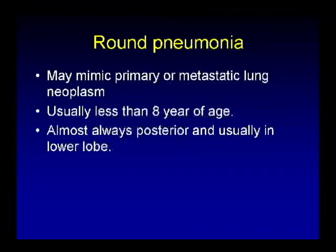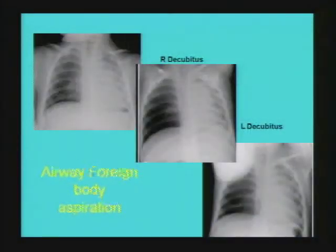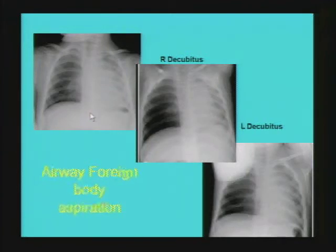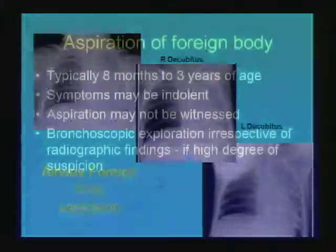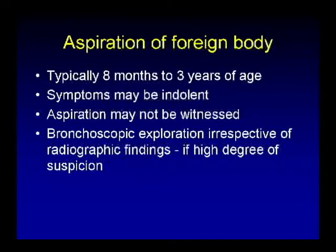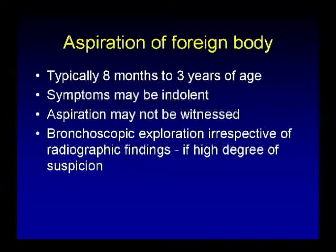This is a demonstration case for airway foreign body aspiration — a patient with a non-radiopaque right bronchial foreign body obstruction. This right and left lateral decubitus radiograph shows failure of collapse of the right lung on the right lateral decubitus view, suggesting an air-trap mechanism. Diagnosis of airway foreign body can be challenging because symptoms may not be consistent, they may be indolent, aspiration may not be witnessed, and the child may not cooperate with inspiratory and expiratory phases.